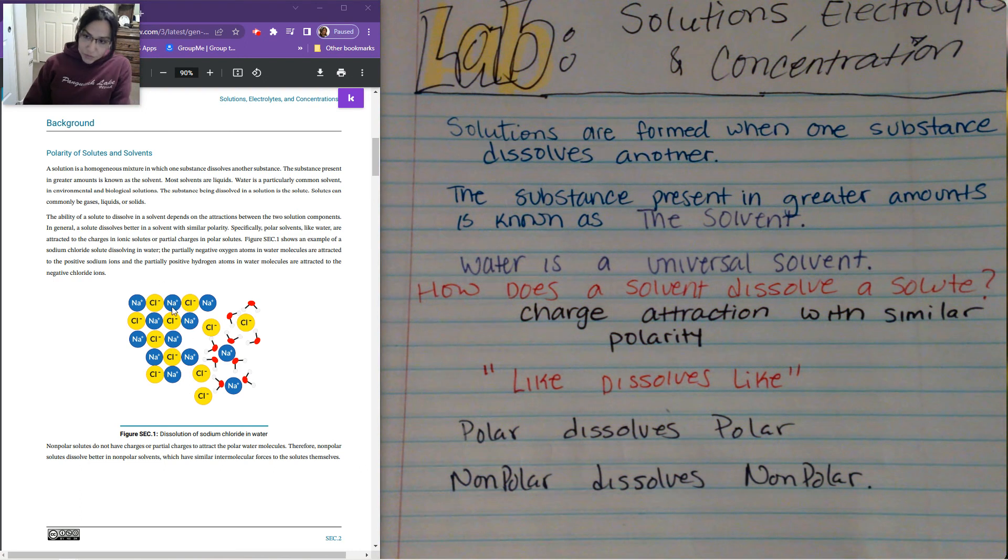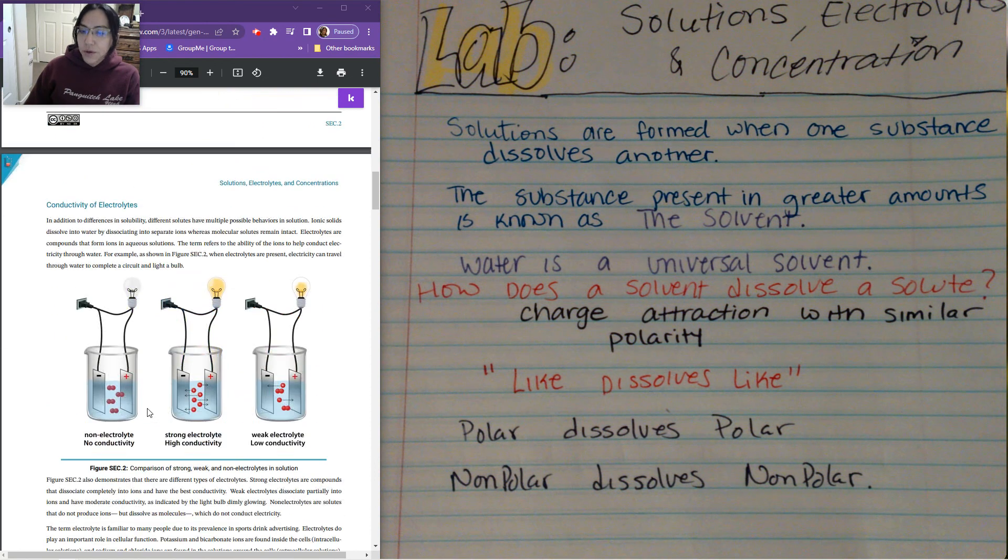So if we look at this image right here, we have sodium chloride. Sodium chloride is an ionic compound, and it dissociates into sodium and chlorine when inside of water. So when placed with water, two polar compounds will dissolve each other, creating just one homogeneous mixture.